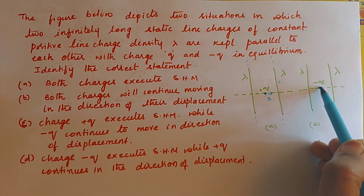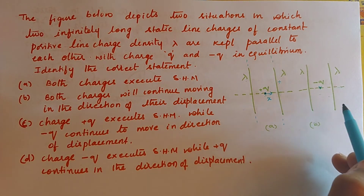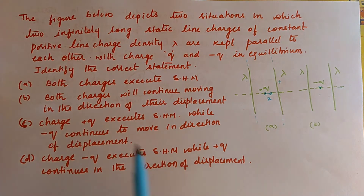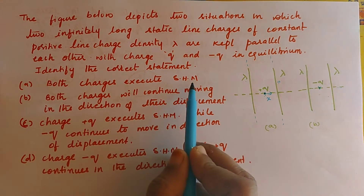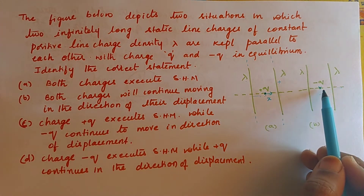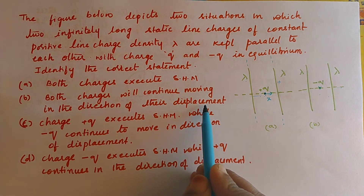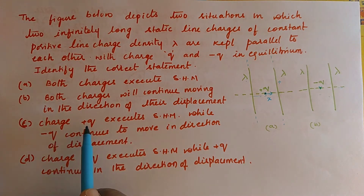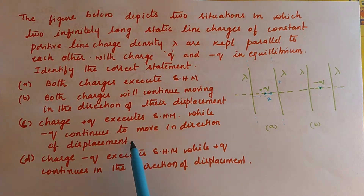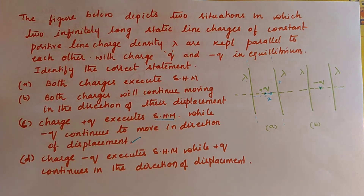For the negative charge, if you displace it toward the positive wire, it moves toward it and cannot come back. So the negative charge will not execute any oscillations. Option 1 — both charges execute SHM — is wrong because only +q will oscillate. Option 2 — both continue moving in the same direction — is also not possible. The viable option is: +q executes SHM while −q continues to move in the direction of displacement. We still need to verify whether it is actually SHM.